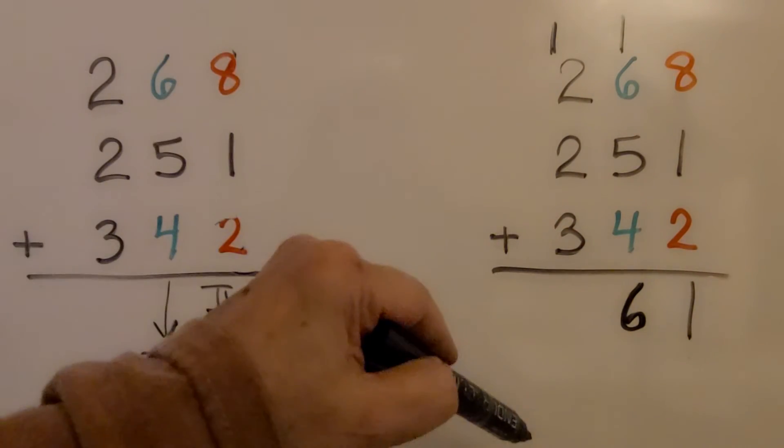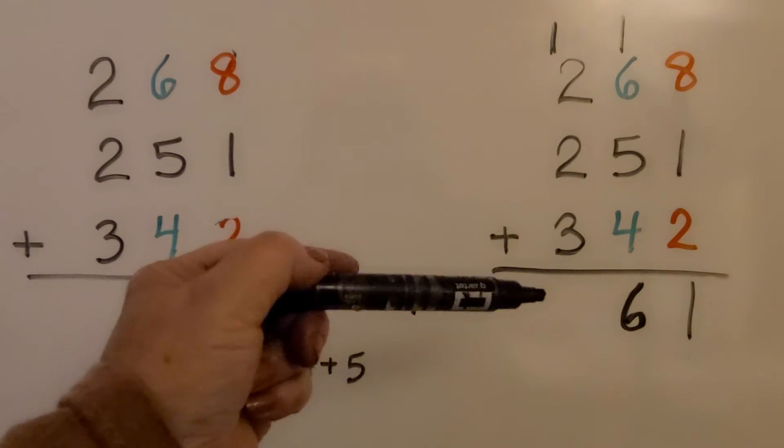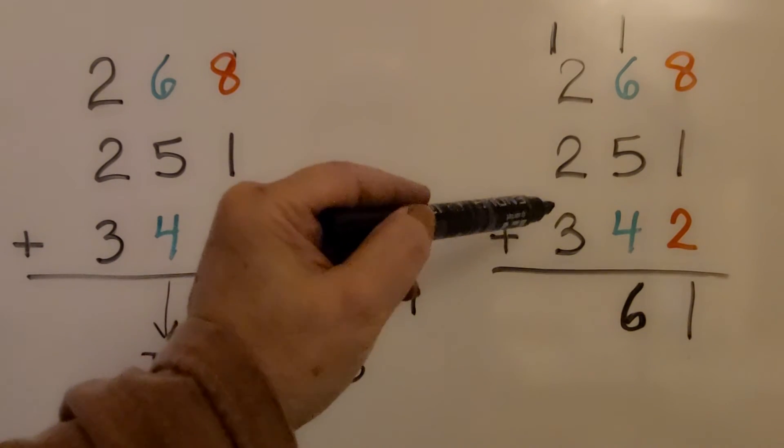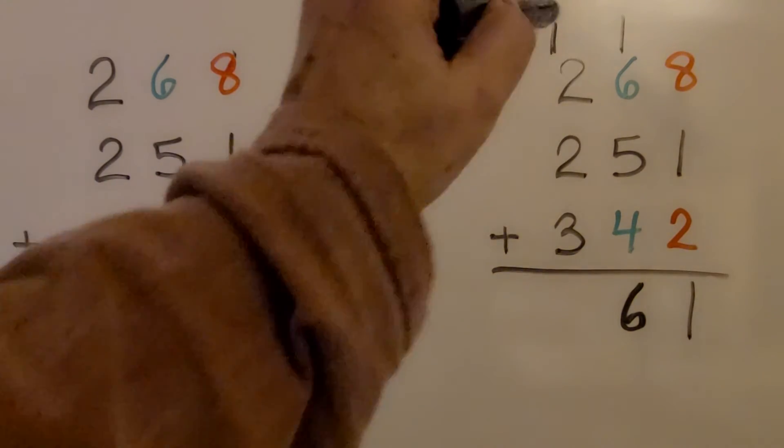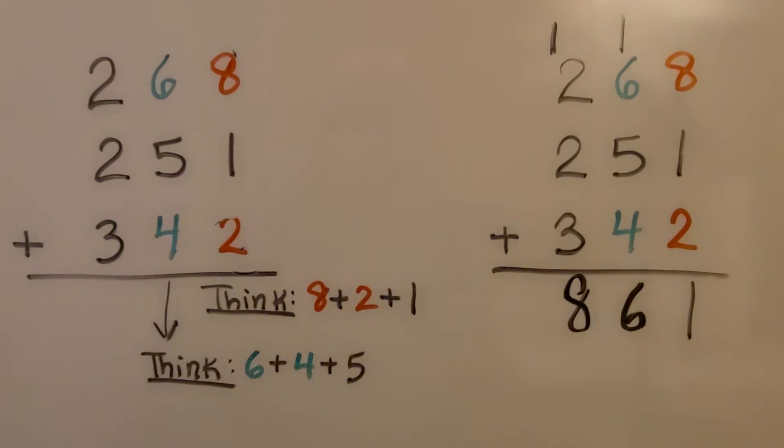Now we add the hundreds. And to go quickly, I like to add the greatest digit first. So we start with 3, 4, 5, 6, 7, 8. We have 861.